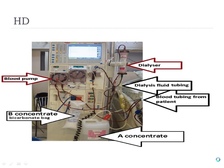Here is a dialysis machine. The concentrate is the dialysate — the solution that bathes the dialyzer, which is the kidney. Blood tubing comes from the patient, pulls blood to the machine, goes through all the pumps and through the dialyzer, then returns to the patient.